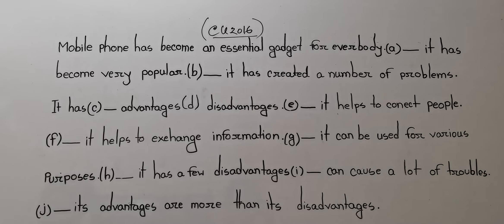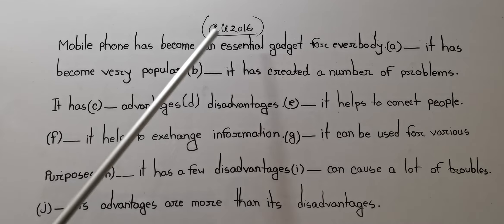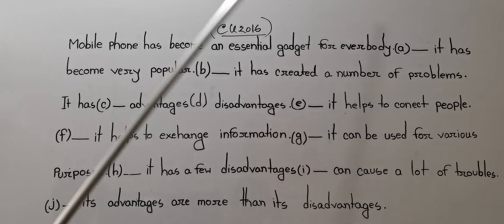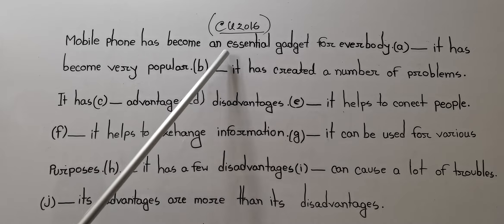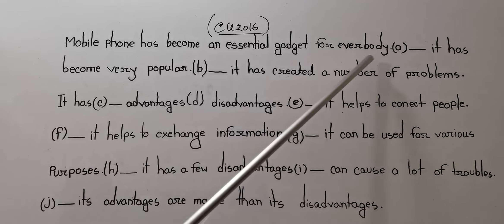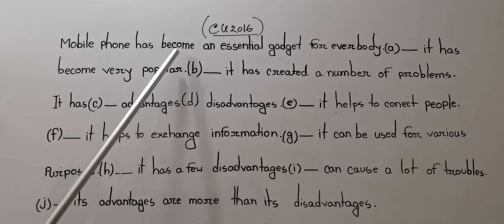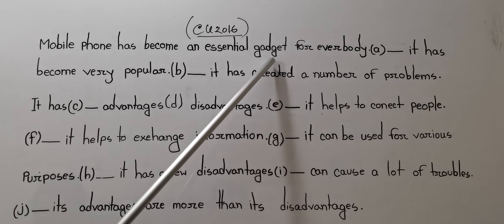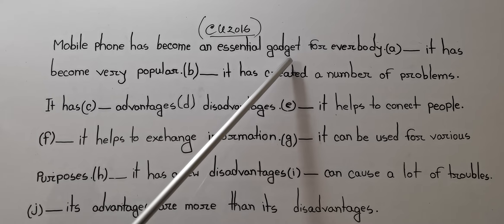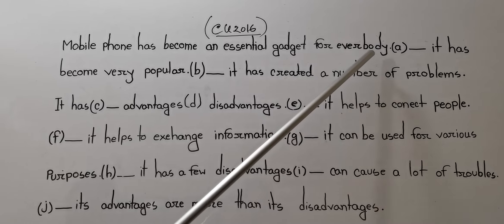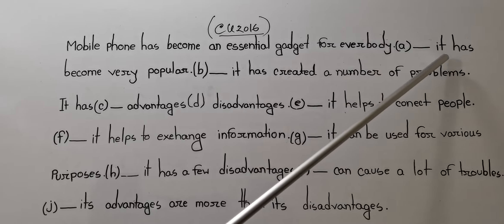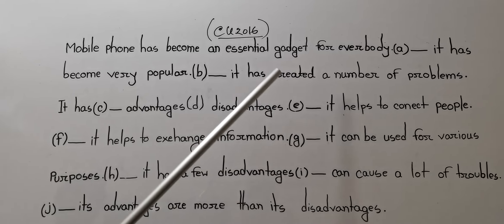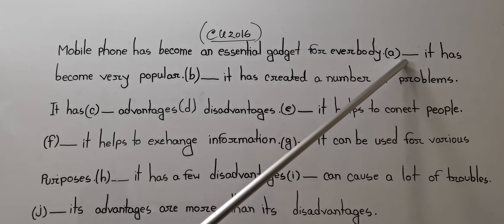Welcome dear viewers. I am going to share with you another video — Kumilabur 2016 Connectors. Mobile phone has become an essential gadget for everybody. Mobile phone has become a very important electronic device for everybody. It has become very popular.